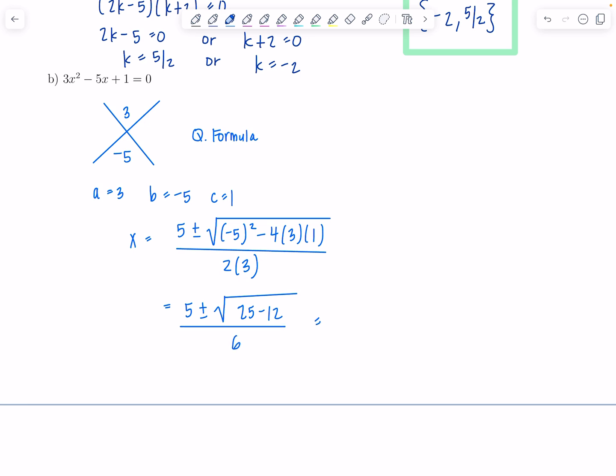So this is 5 plus or minus square root. That's going to be 25 minus 12 over 6. And then we have 5 plus or minus square root 25 minus 12. That's 13 over 6. Now, this is considered your exact answer. Radical 13, that doesn't simplify. And then nothing else can be reduced. So if they ask you just for the exact answer and they didn't tell us to round, then we would stop.